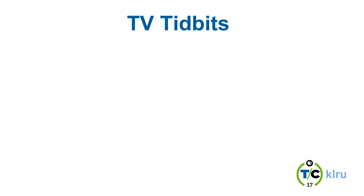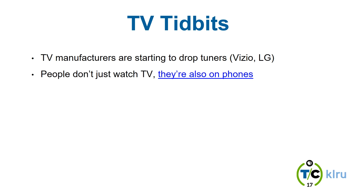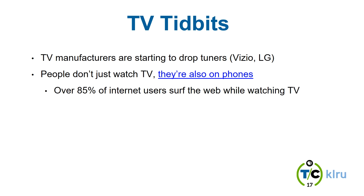A few TV tidbits: TV manufacturers are starting to drop tuners — that means technically it can't be called a TV, it has to be called a display or monitor. Be aware that some traditional TV manufacturers are starting to do this. Also, people don't just watch TV — over 85% of internet users surf the web while watching TV. If you've watched TV recently, that probably isn't a surprise.